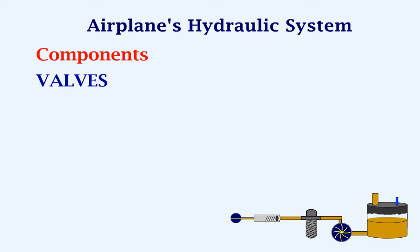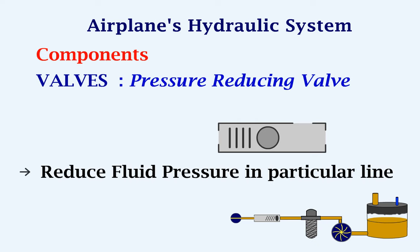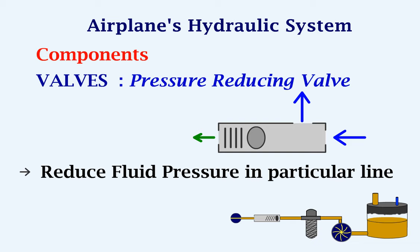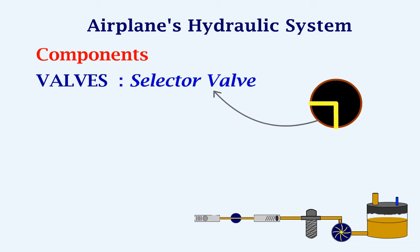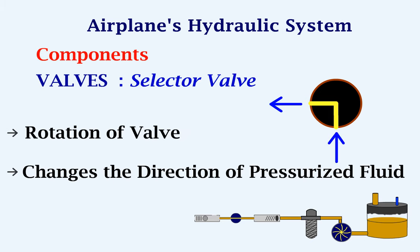Next, we will look at pressure reducing valves. This valve is used to reduce the pressure of the hydraulic fluid in a particular line. If the fluid enters here, in this line the fluid will have the same pressure, but in this line the pressure will be less. Next, we will look at selector valves. This valve changes the direction of the pressurized fluid. This is done by rotation of the valve depending on which side the pressurized fluid is required.